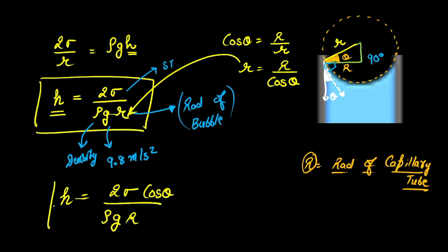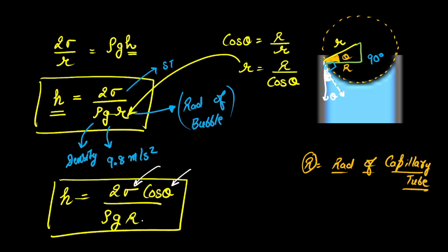This is the final expression for the height of capillary rise. Here, σ is the surface tension, θ is the angle of contact, R is the radius of the capillary tube, g is the acceleration due to gravity, and ρ is the density of the liquid. I hope you are now familiar with capillary rise and the formula to find the height of capillary rise. See you in the next video!